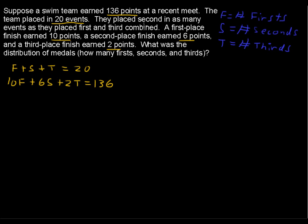Finally, we're told that they placed second in as many events as they placed first and third combined. So the number of second place finishes equals the number of first place finishes plus the number of third place finishes. I wrote it over here because I know we're going to have to manipulate to get it in that order of f, s, t, constant. So let's subtract f and subtract t, and then we'll get negative f plus s minus t equals 0.